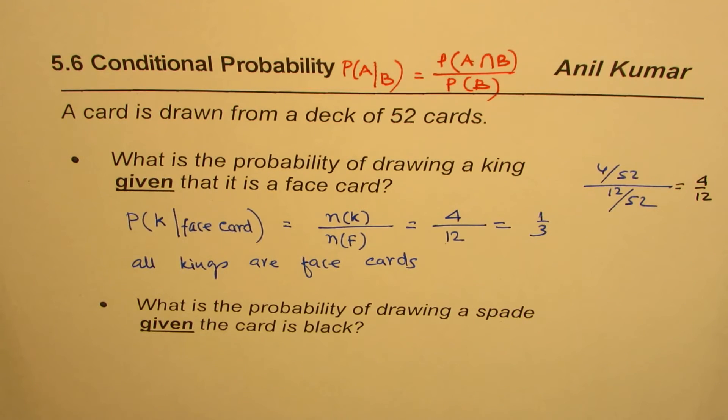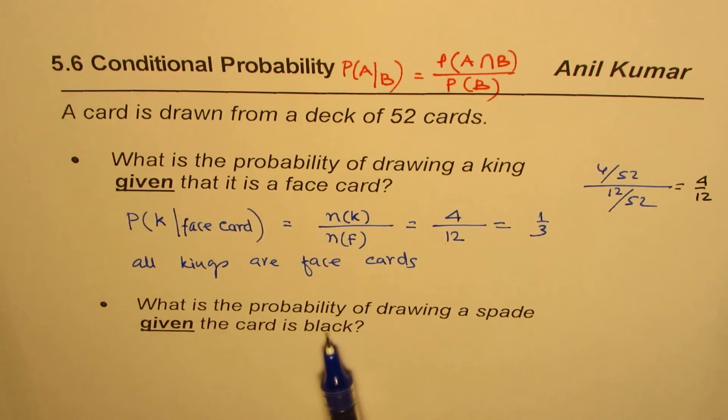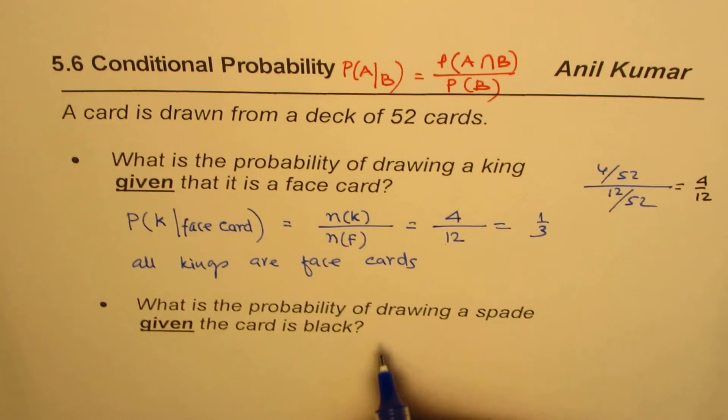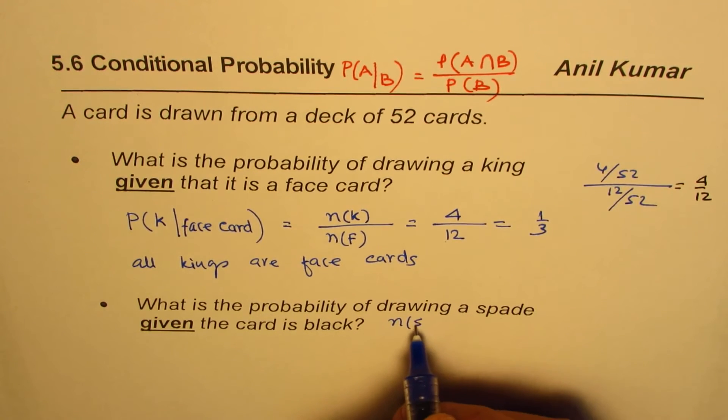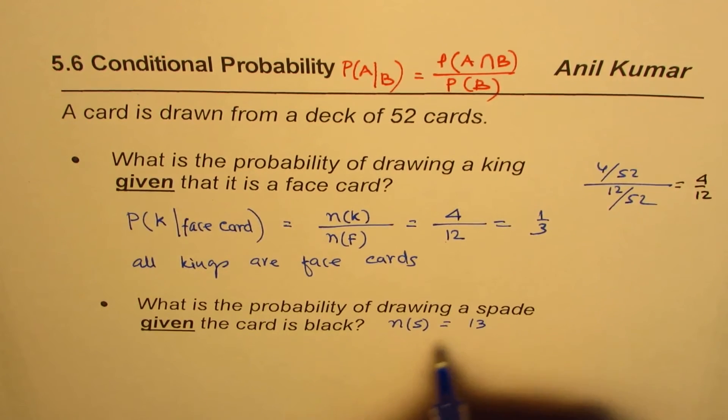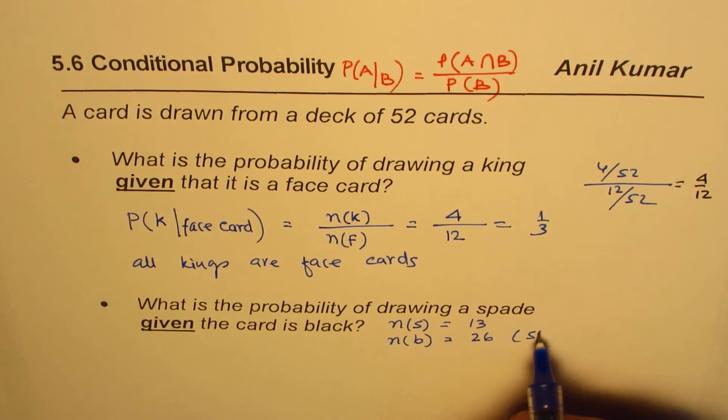spade given the card is black? Now how many black cards are there? So we say number of spades is 13, and number of black cards is 26, right? 13 plus 13 = 26. So we have spades